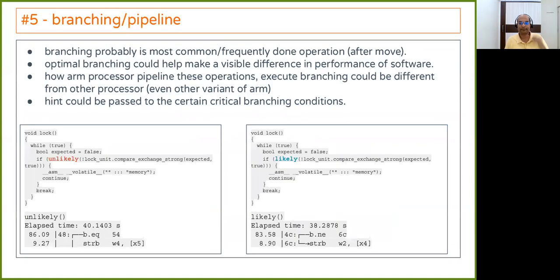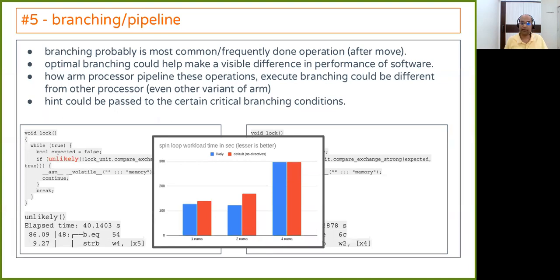The fifth tip is branching. After load and move instructions, branching is the most executed instruction. Different processors — including ARM variants — may implement branching differently. It is important to specify hints to the compiler about branch expectations so it is optimized the same way on all platforms. Without compiler hints you get lower performance; with them you get better performance consistently wherever your software runs.